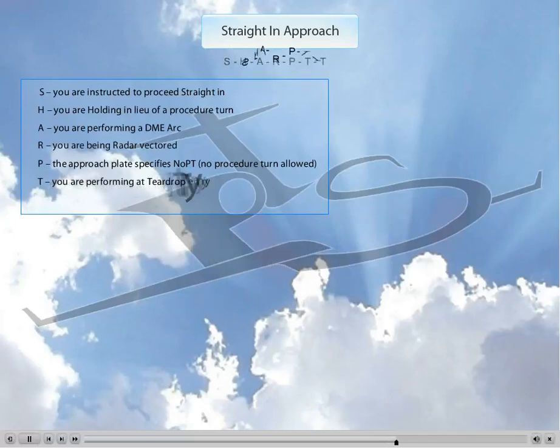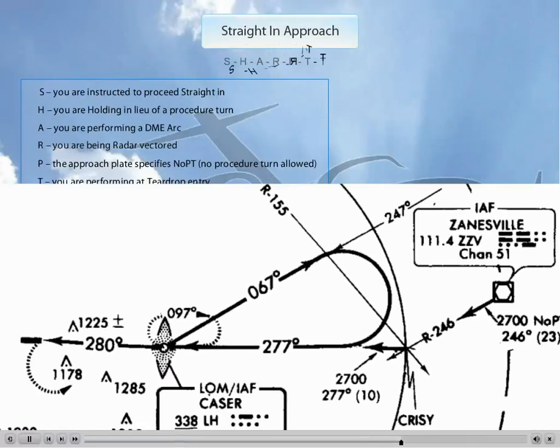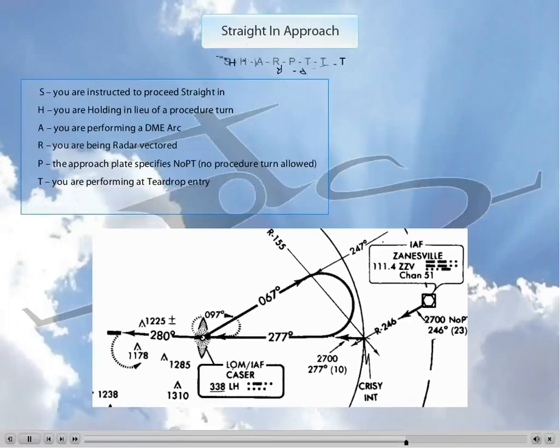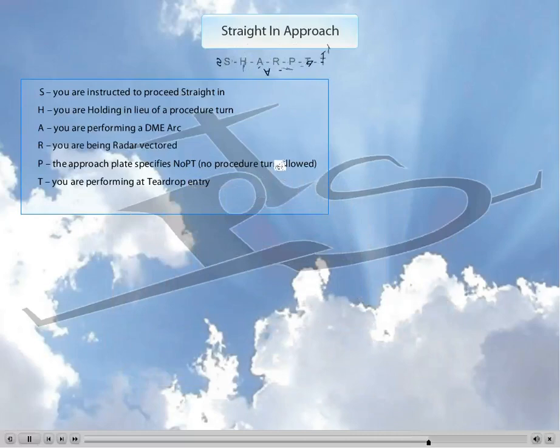The first T stands for Teardrop. Performing a teardrop procedure is a mandatory course reversal, and it is required for the approach. It's already kind of a procedure turn, so you're already doing a procedure turn, it's just a teardrop instead of a normal procedure turn.